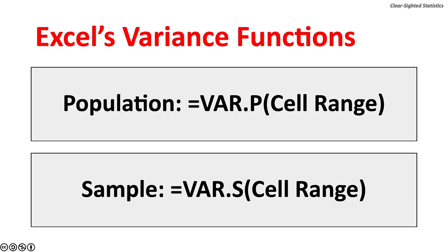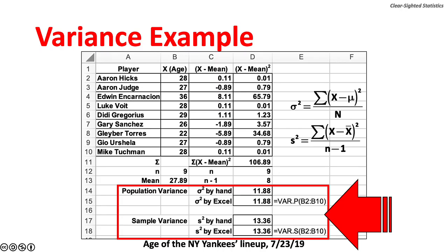Excel's two variance functions save time: VAR.P for population variance and VAR.S for sample variance. For the Yankees lineup, population variance is 11.88 and sample variance is 13.36. But these numbers are in years squared, not years — variance is not typically reported when describing data. However, variance is used to calculate many important measures, most importantly standard deviation.